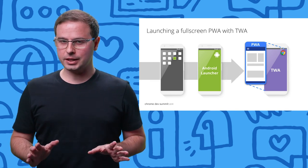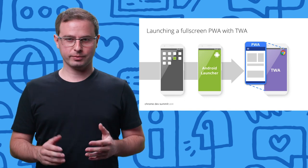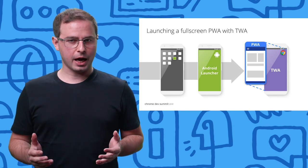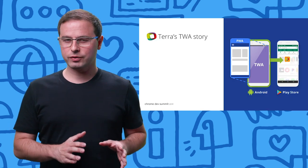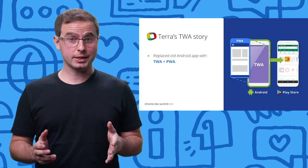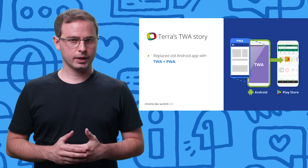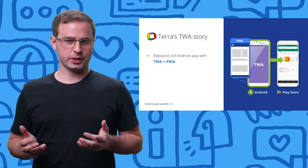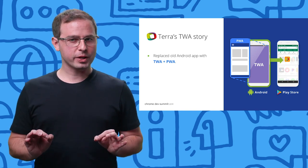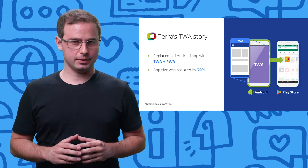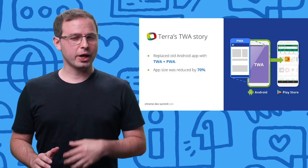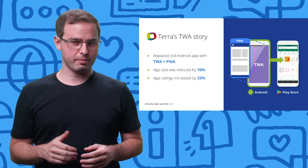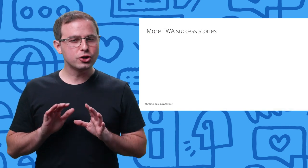A good example of this TWA use case is Terra, one of the biggest media companies from Brazil. Terra stopped maintaining their native Android app in 2019. After a while, they decided to replace it with their progressive web app through trusted web activity. This way, they could deliver the same great experience to web and Android users with a single code base, while reducing the app size by 70%. As a result, users reacted very positively to the new UX, and ratings in the store went up 25%.